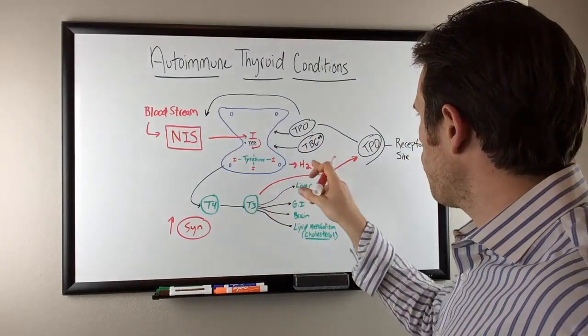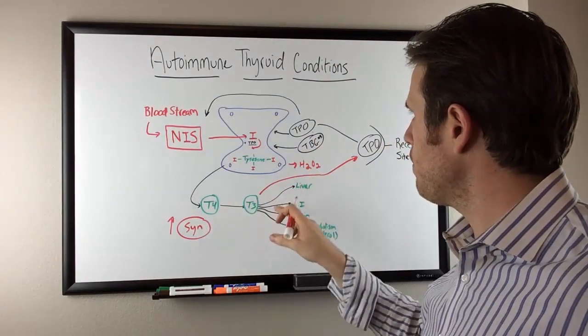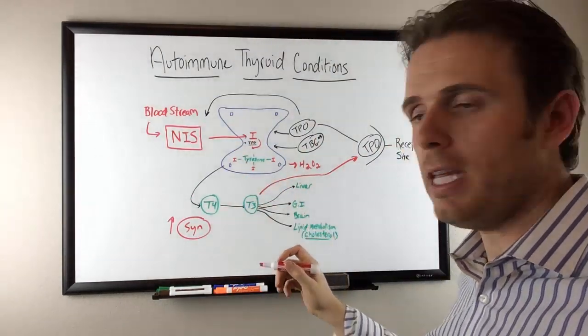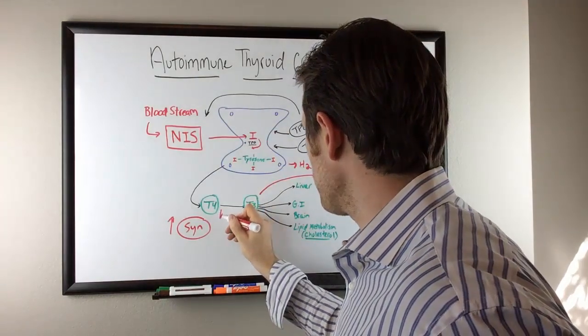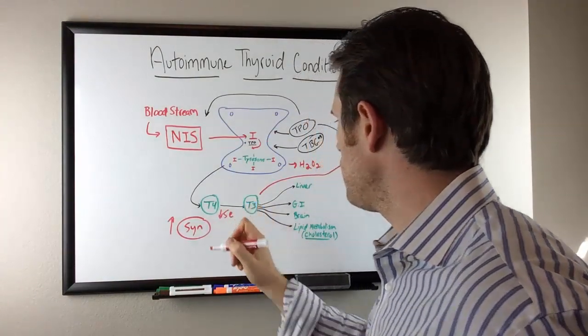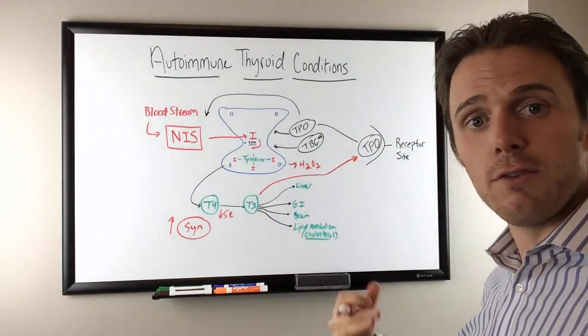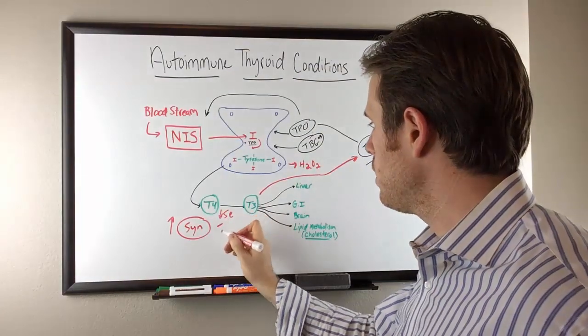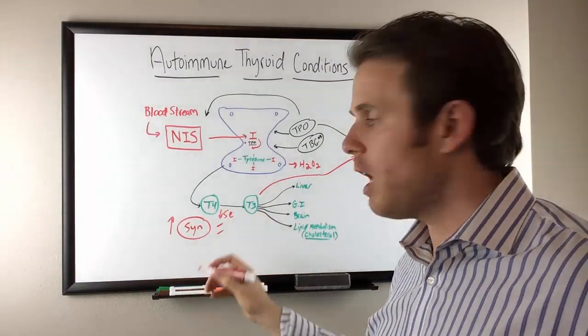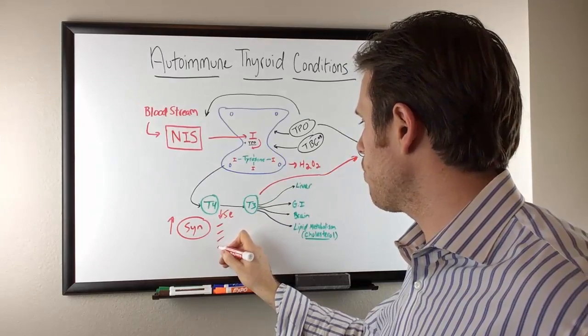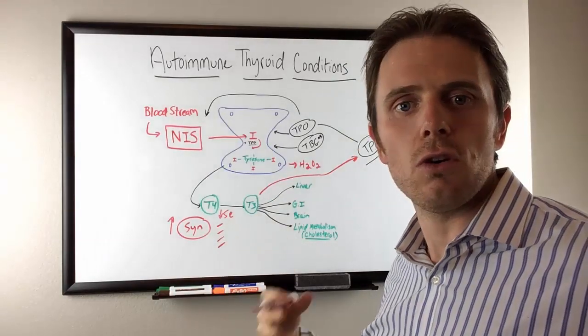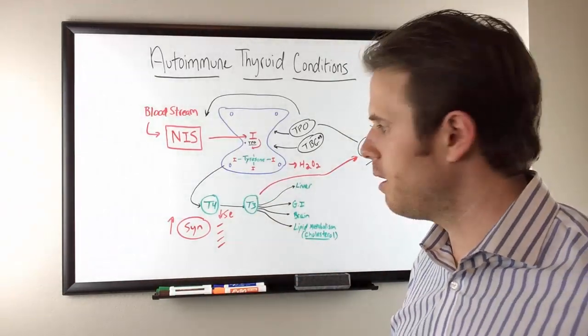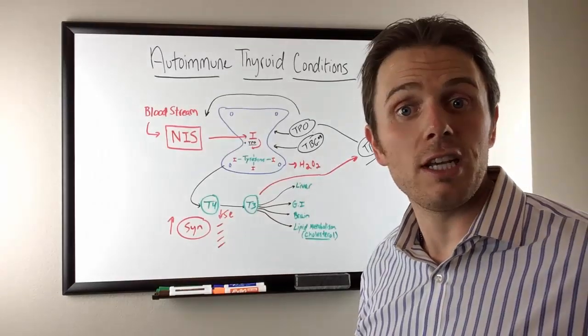Especially when we know how important selenium is, and most people that have autoimmunity have selenium issues. They have decreased selenium. And what if they also have adrenal fatigue? What if they have an anemia? What if they have hypochlorhydria and low protein? The list goes on and on. And other nutrients such as zinc as well.